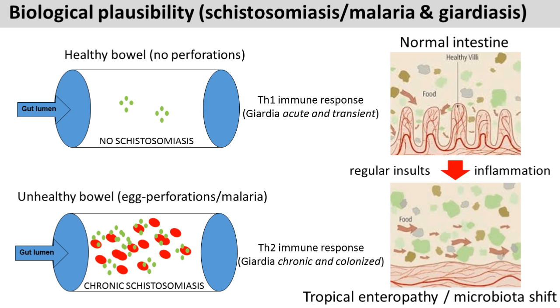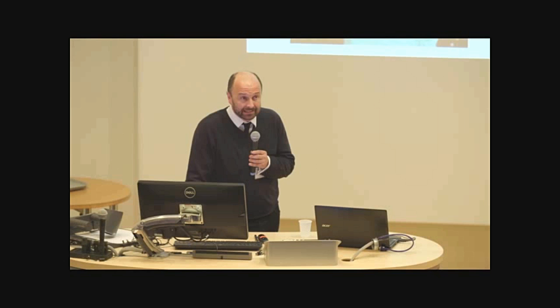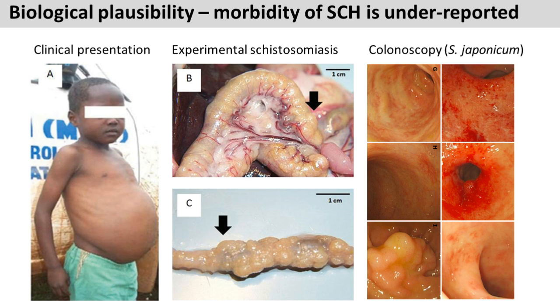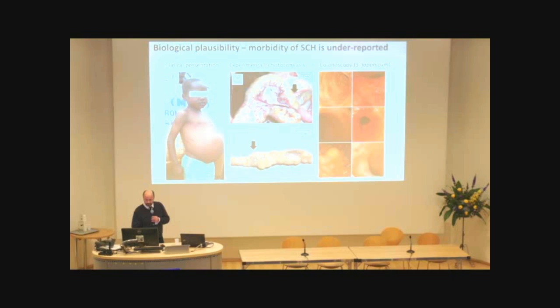For those who don't know the severity of schistosomiasis - this is a typical presentation of a child in those environments with hepatosplenic disease, but we often don't visualize the bowel pathology as well as we should. We can use calprotectin as a fecal biomarker, but if you're able to inspect that bowel as in experimental schistosomiasis in animals, you'd see granulomatous reactions on the internal surface of the bowel. We don't do colonoscopies in this resource-intensive setting, but for those who have done colonoscopy with japonicum, you can see internally a lot of inflammation and granulomatous reactions - these sites must be good colonization environments for other parasites.